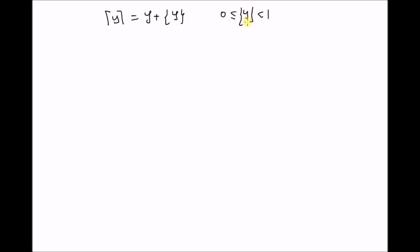When this fraction value is 0, then we know that y is an integer, and when this fraction value is not 0, then we know that y is not an integer, and the smallest integer that is greater than this value is the ceiling function.